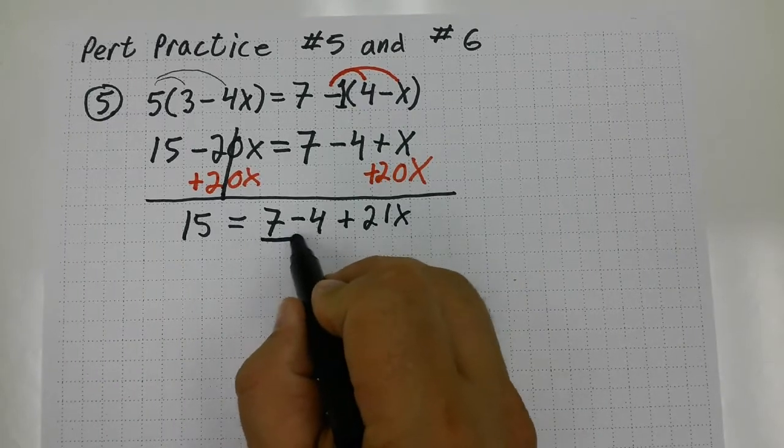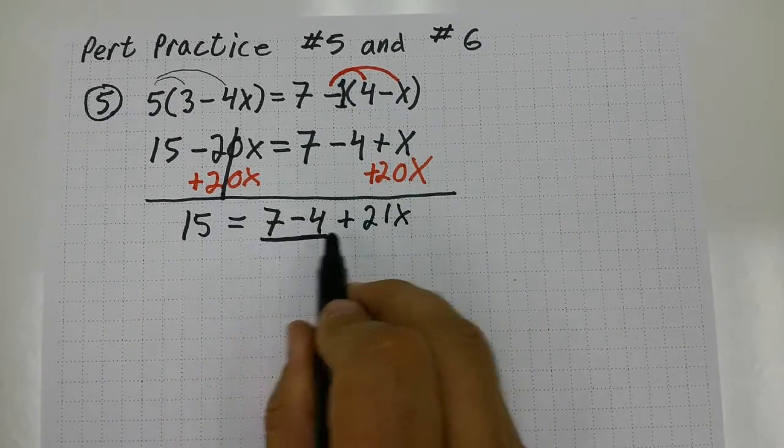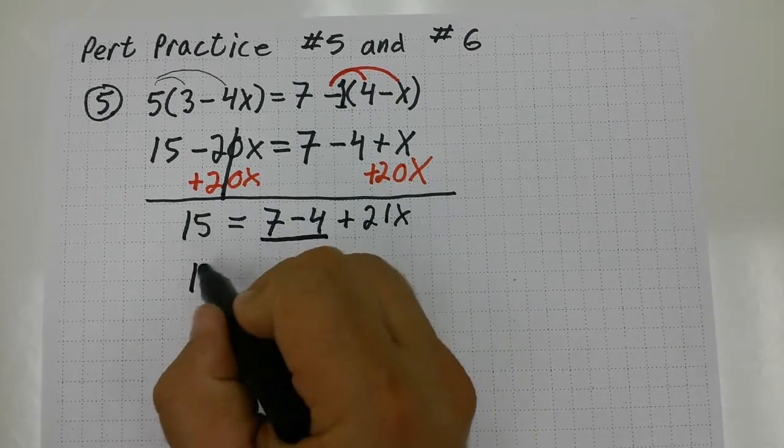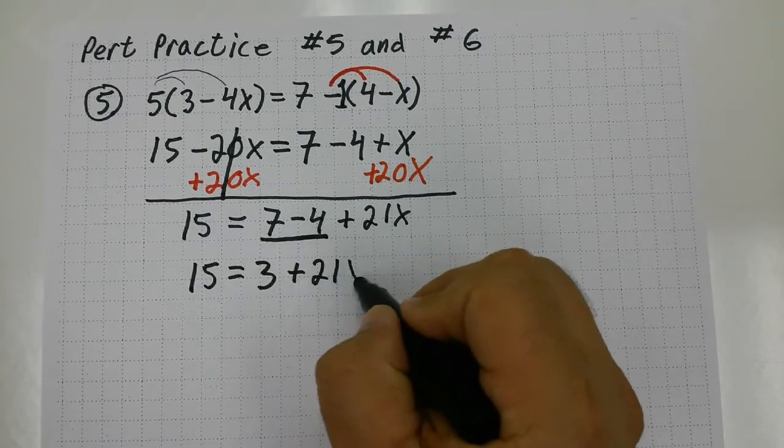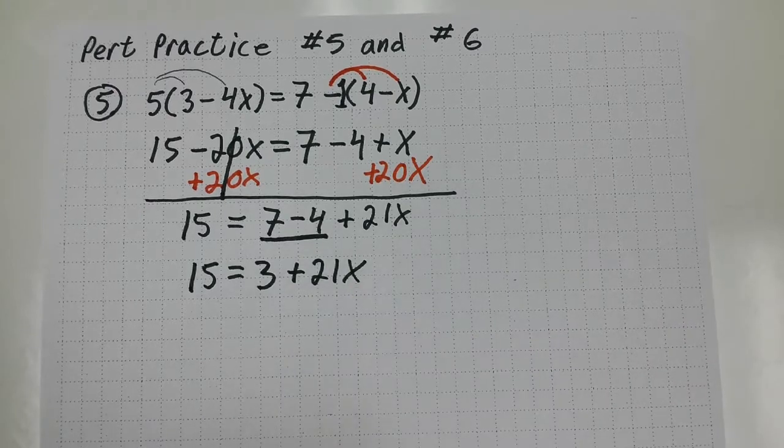I could combine like terms while I'm here. The 7 minus 4, that's going to give me a 3. So this is 15 equals 3 plus 21x. Now I only have a variable on one side.